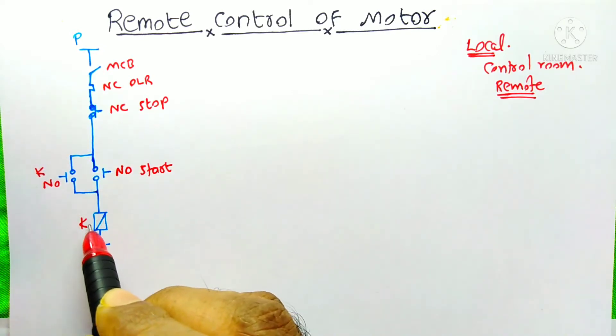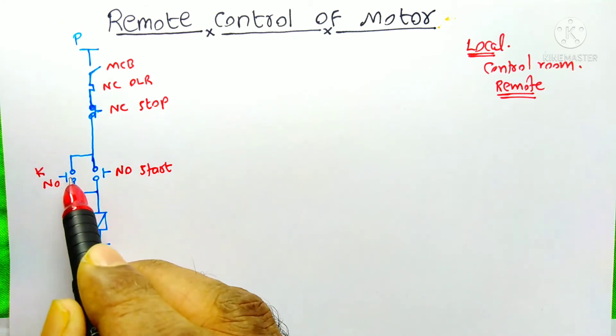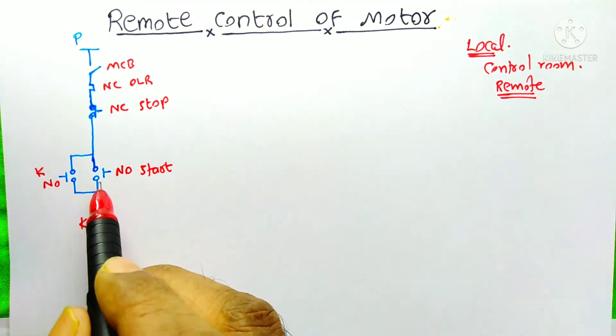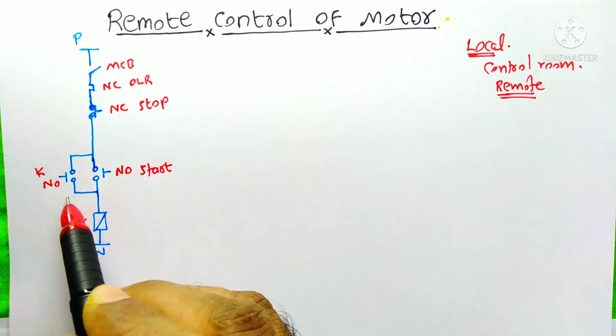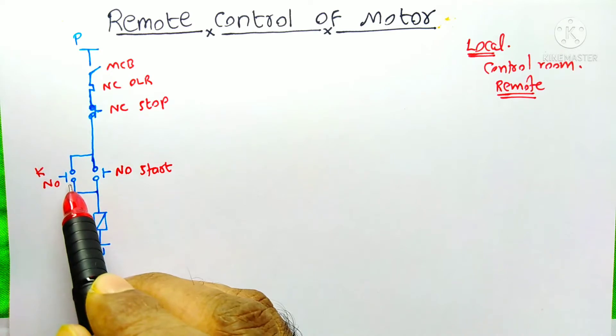So when the power reaches here, the contactor will on and this NO contact will become NC. And even if we release this push button, the power will continuously flow through this contact because it will become NC.